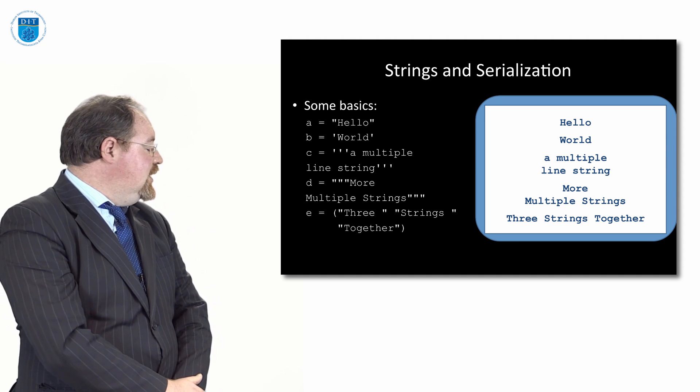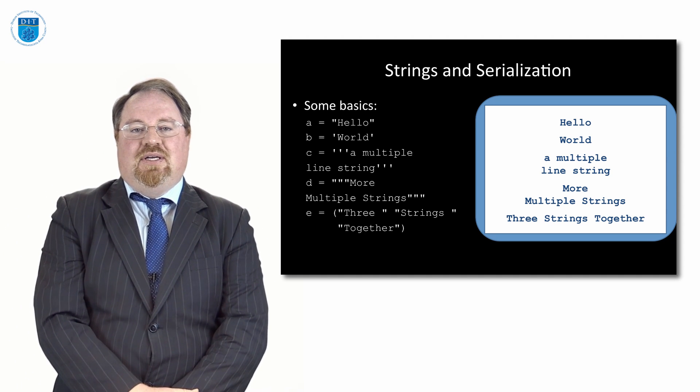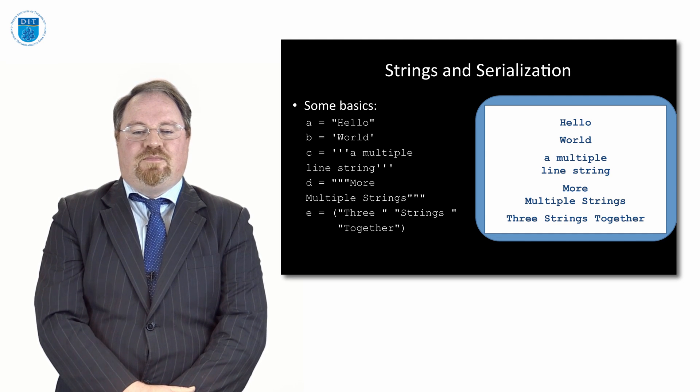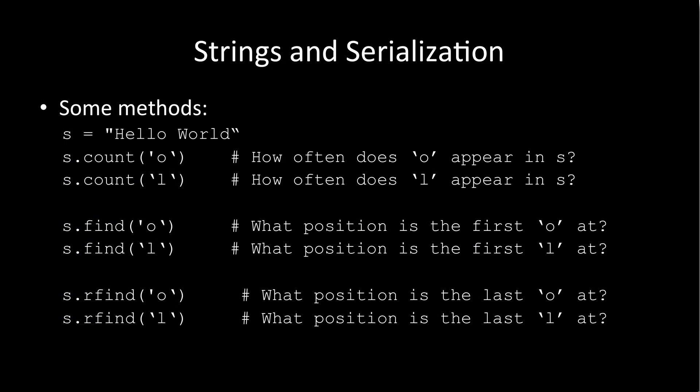There are some built-in methods we can use with the string type. One is called count, one is called find, and one is called rfind. If the string is 'hello world' and I say count('o'), I'm asking how many times does the letter 'o' appear in 'hello world'. If I do string.count('o'), it looks for the letter 'o' in the string.